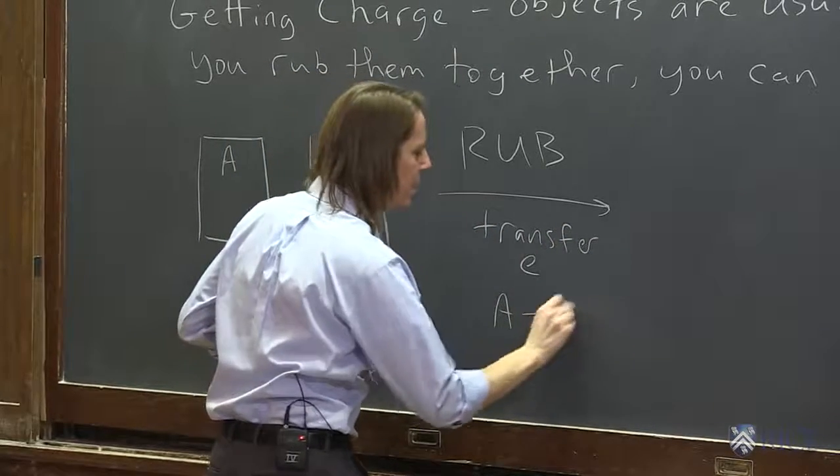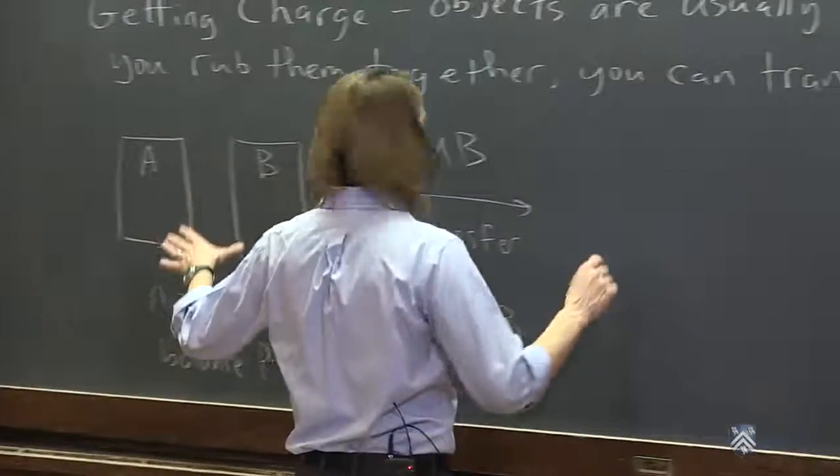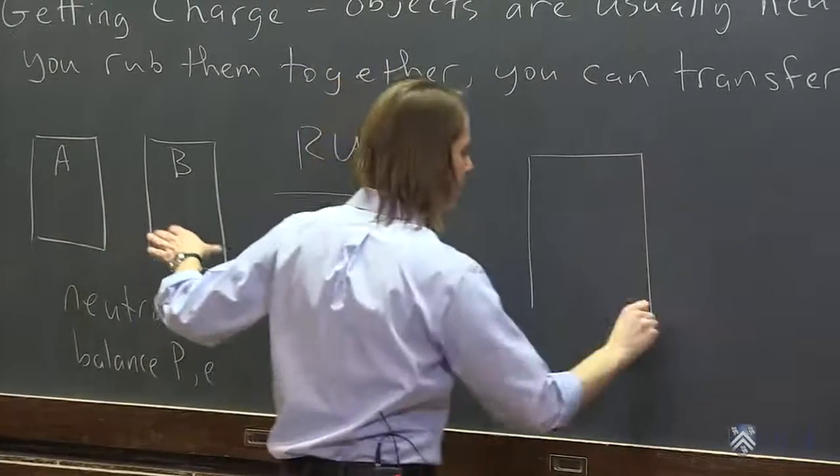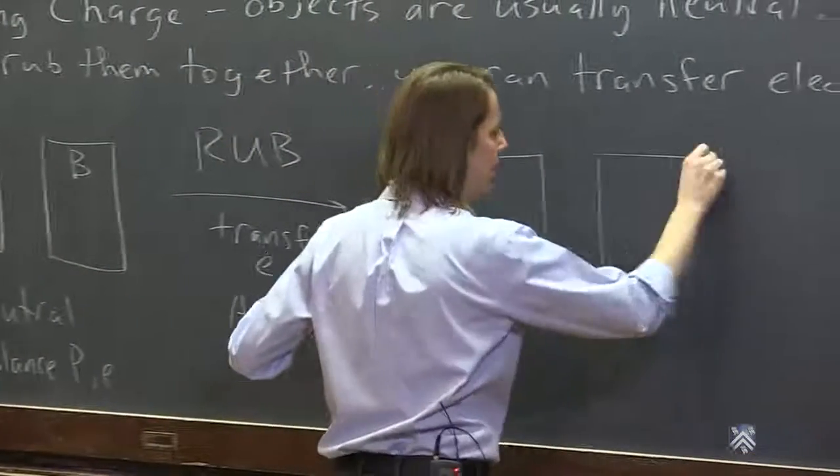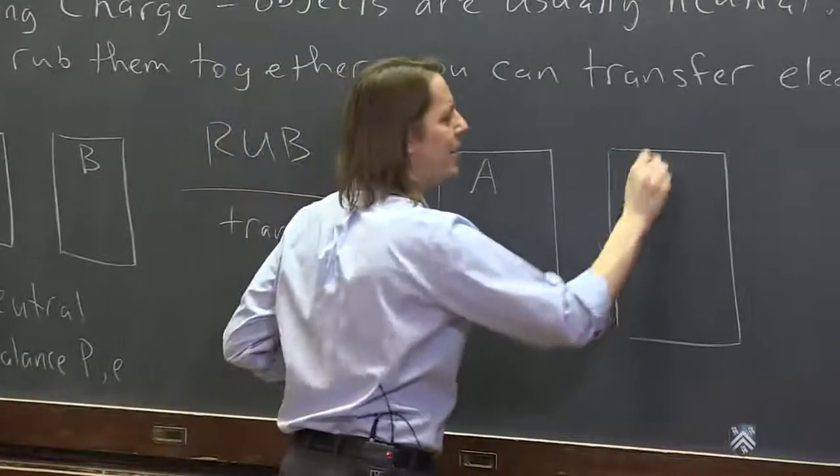Electrons from A to B. Okay, so when you're done it will look like this: we would have mass A here and mass B here, we rub them together, it transferred from A to B, so what's going to happen...